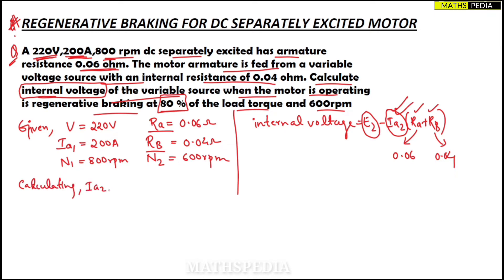For calculating Ia2, we know that torque is directly proportional to the armature current, so we can write Ta2/Ta1 = Ia2/Ia1. This is the formula for calculating Ia2, remember this.